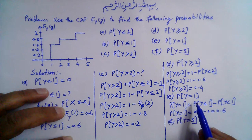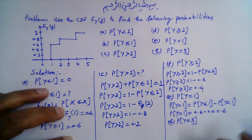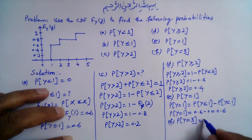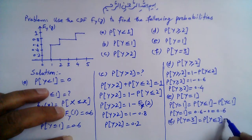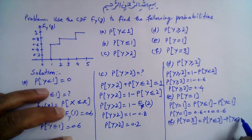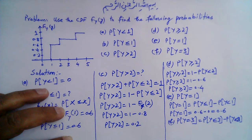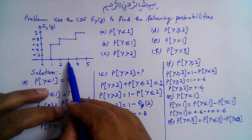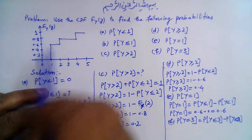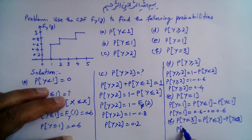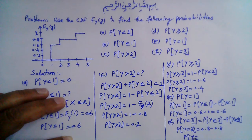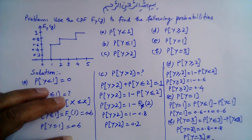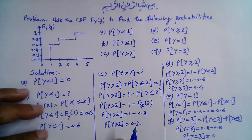Part f: probability that Y is equal to 3. This can be found in a similar manner. P[Y = 3] = P[Y ≤ 3] − P[Y < 3]. From the plot, P[Y ≤ 3] = 0.8 and P[Y < 3] = 0.8 as well. So P[Y = 3] = 0.8 − 0.8 = 0. The probability that Y takes on value 3 is 0. This completes the solution to the given problem.